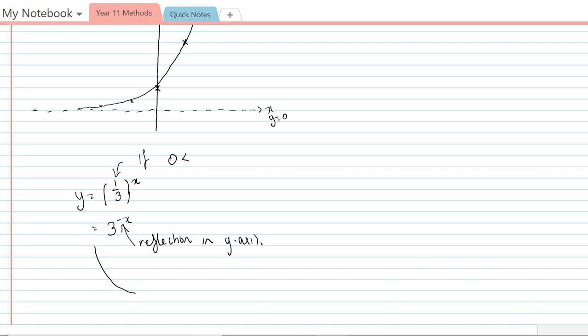So zero is less than the base, less than one, then we get this sort of shape here. Those kind of questions are quite rare and most likely, especially in year 11, you're going to encounter base 2, base 3, base 5, base 10, that sort of thing. When you get into year 12 methods, you're going to encounter the base e, and I'll go into that in a later video.